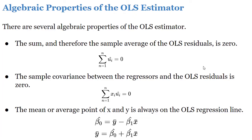The first property of the OLS estimator is that the sum and the sample average of the OLS residual is zero. We can write that as: summation of û_i equals zero.